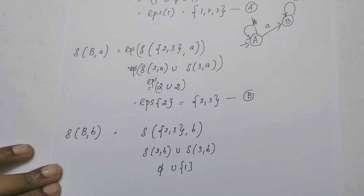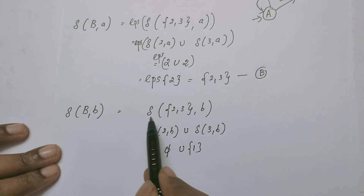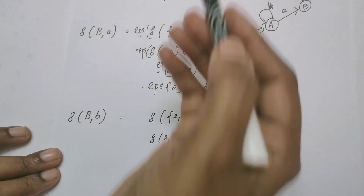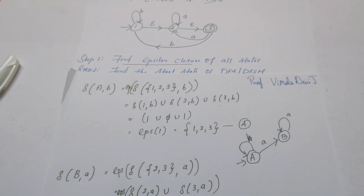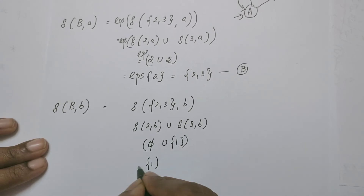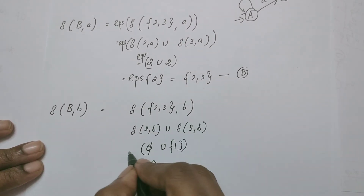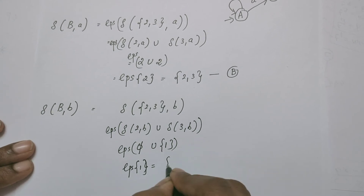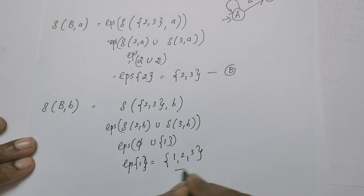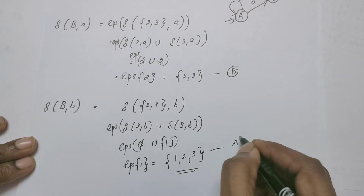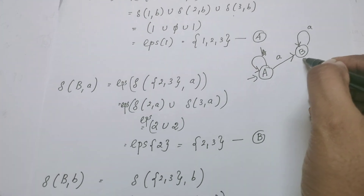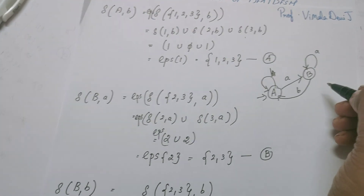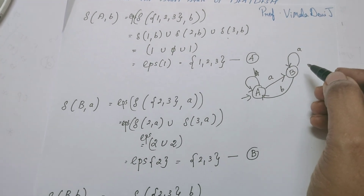From state B, define transition on input symbol B. δ({2, 3}, b): from 2 on B is null; from 3 on B, it goes to state 1. Resulting state is {1}. Epsilon closure of 1 is {1, 2, 3}, which is already recognized as state A. So from B on reading input symbol B, it goes to A. No new states are identified, so transition diagram construction is complete.